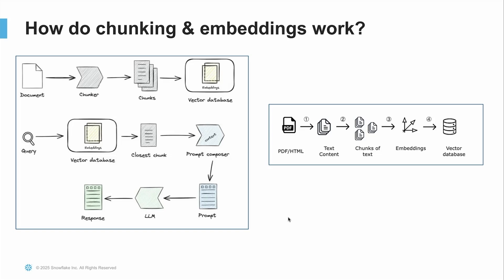So how do chunking and embeddings work in this whole process? As you can see in this chart, we have our document, which we use a chunker to break into different pieces. Once we have different sets of chunks for the document, those get stored in a vector database. To elaborate — suppose you have a PDF. We first extract the content, break it apart into small chunks, and then use embeddings to store it in the vector database. Once we have a vector database of word embeddings, you can query it: input a question and it will look through the vector database to find the closest chunk. This is when the similarity metrics come into play.